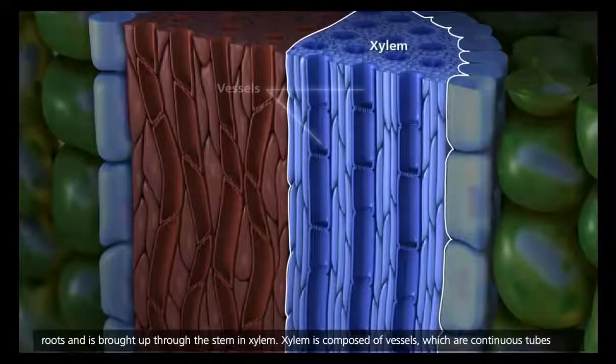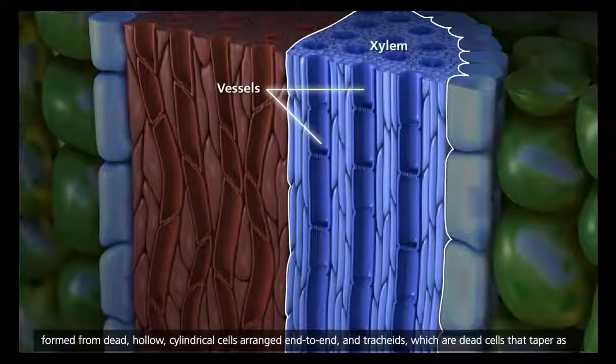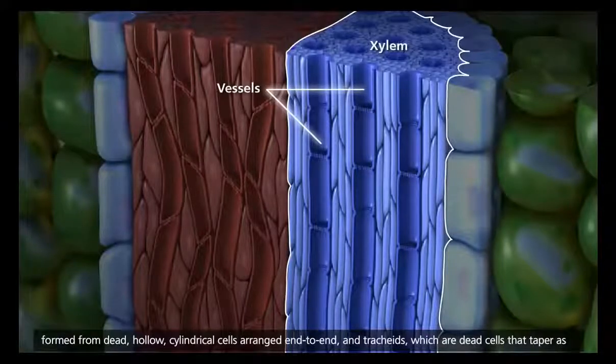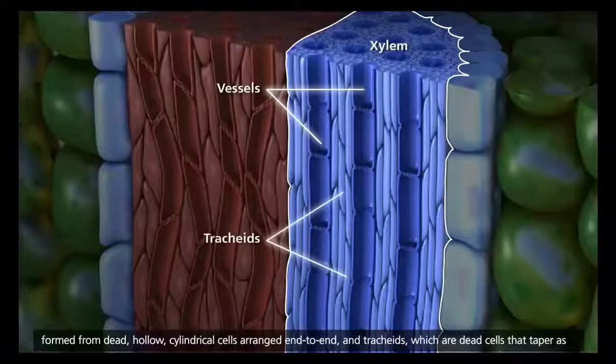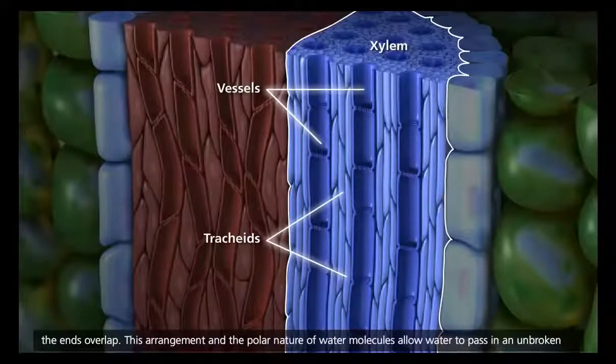Xylem is composed of vessels, which are continuous tubes formed from dead, hollow, cylindrical cells arranged end to end, and tracheids, which are dead cells that taper as the ends overlap.